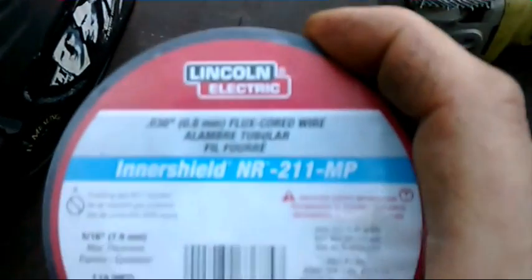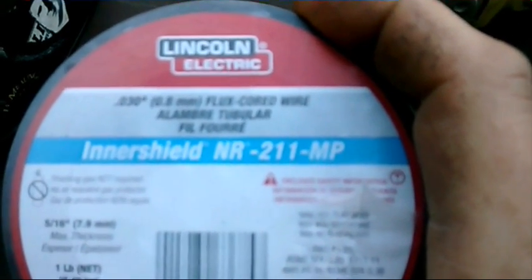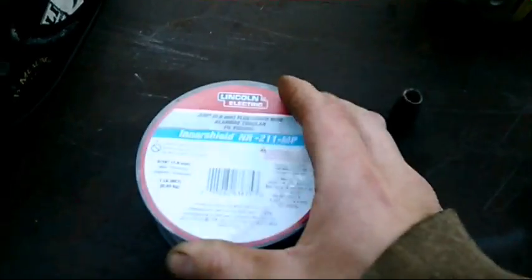This is what I went and got. I just got one of the small two-pound rolls. This is 030 inner shield. The self-shield is usually called inner shield. The gas shield is usually outer shield.